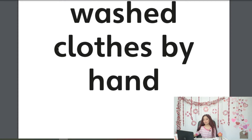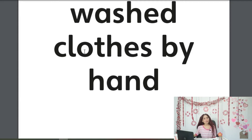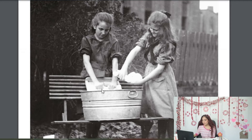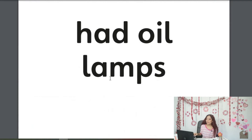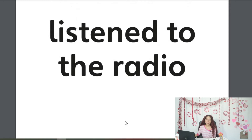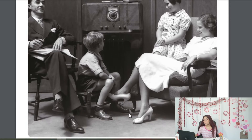Also 'washed clothes by hand' — wash clothes by hand. Some people still do this; sometimes I do it too because some clothes aren't made to withstand washing machines. They are washing the clothes by hand. We also have 'had oil lamps' — in the past people didn't use to have electricity, so they used to use oil to put on a lamp and turn it on. And also 'listened to the radio' — they didn't use to have music on cell phones or mp3 players, so they listened to music on the radio. Now I think we are ready to go to the activities — we have three pages for today.